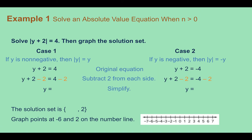Example 1: Solve an absolute value equation when n is greater than zero. Solve the absolute value of y plus 2 equals 4, then graph the solution set. We need to consider both cases: Case 1, where y is non-negative, we take what's inside the absolute value and set it equal to the positive version. Case 2, we take what's inside and set it equal to the negative version. Get rid of the absolute value symbol and solve both equations for the variable.